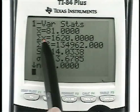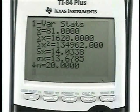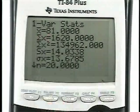Now the very first object that comes up, or the very first item, is X bar, which stands for the sample mean. The mean for this data was 81.